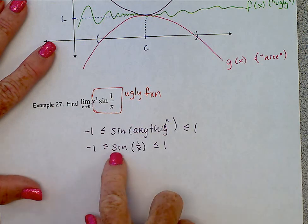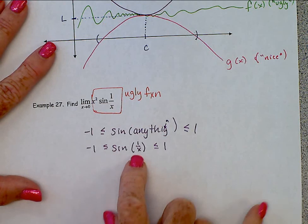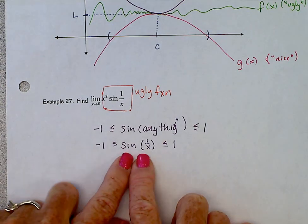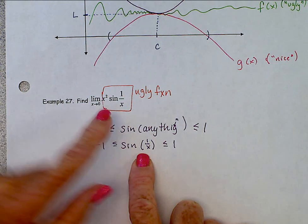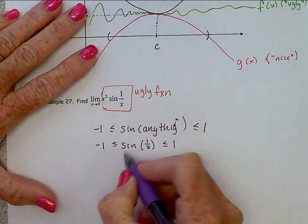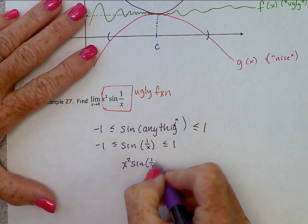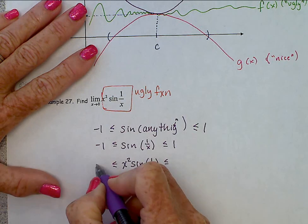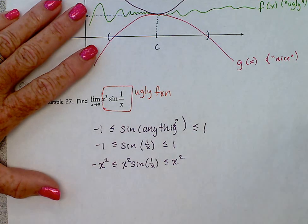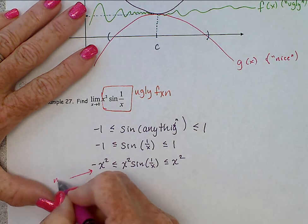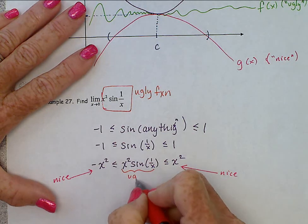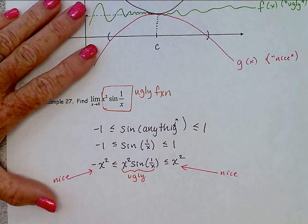Alright, now, this is where we want our ugly function to be, just like it was up here in the middle between two nice functions. So we have these two nice here, and we want the ugly one here. But if we look back, our ugly one also had this x squared. So, to make this piece look entirely like that, we're going to have to multiply by x squared. So, x squared sine of one over x. Well, if we multiply the middle by x squared, we have to multiply the outsides by x squared. And there we have it. Here's some nice function. Here's another nice function. And here's this nasty, ugly function that is trapped between two nice functions.